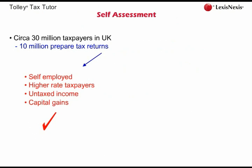The most common example of untaxed income — i.e. income from which tax is not deducted at source — is property income. If you rent out a property, you have an obligation to report that property income to the revenue by means of a tax return. Finally, any taxpayer who has made a chargeable capital gain in the year also has a duty to submit a self-assessment return.